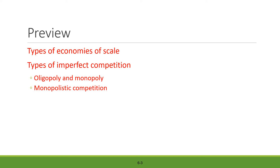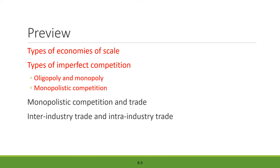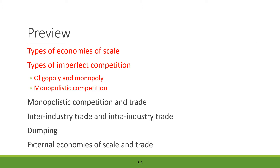Today we are going to study monopolistic competition and compare how trade happens under such competition. Then we will cover inter-industry trade and intra-industry trade. We will also shed some light on dumping — why it happens and what types of dumping exist — and finally the external economies of scale and its relationship to international trade.